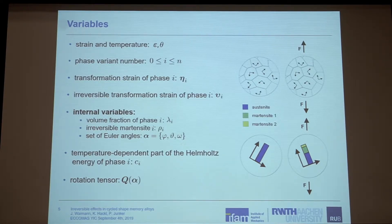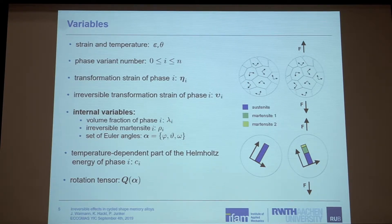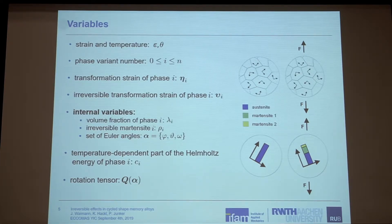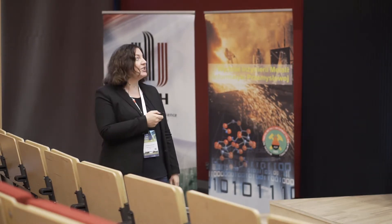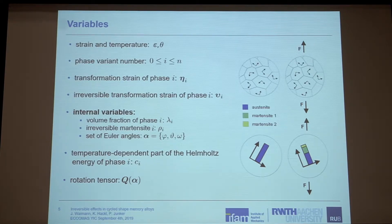In addition, I used internal variables to describe the microstructure. We have a volume fraction — a reversible one and an irreversible martensitic volume fraction. I also used a set of Euler angles to describe the polycrystalline structure of the material. That means we have different oriented grains, and instead of calculating the phase transformations in every grain, which comes with high numerical effort or large calculation times, we calculate the averaged orientation of the transformation taking place, so our computational effort is highly reduced. We also have a temperature-dependent part of the Helmholtz free energy, which describes the stability of every phase at a given temperature, and a rotation tensor Q to account for the set of Euler angles.